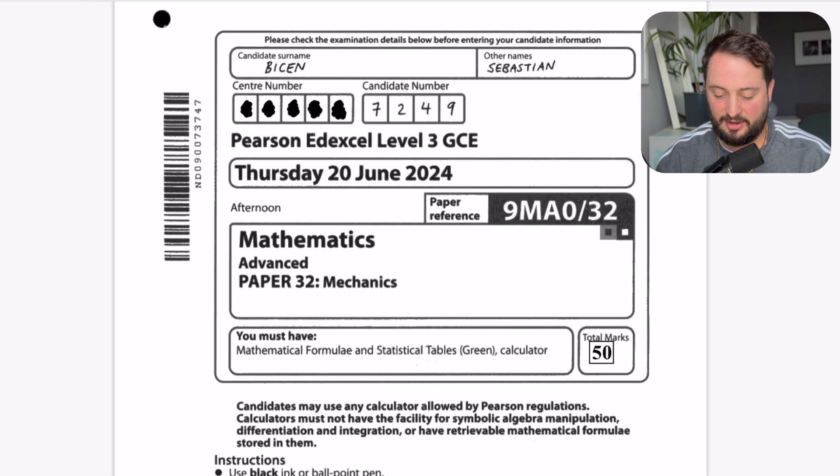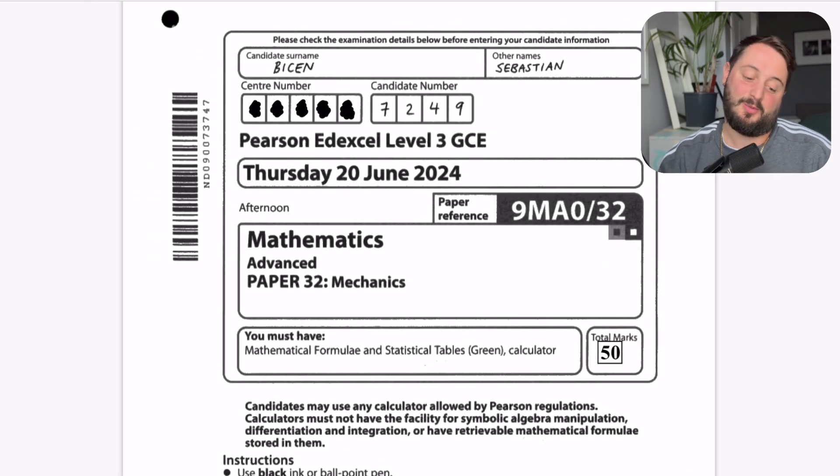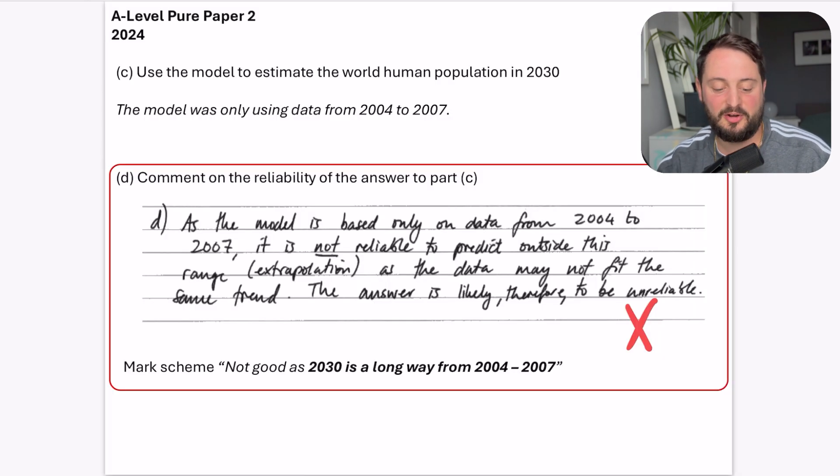Now where do you think I've dropped this mark in the pure paper? Well, I knew where I was going to lose this mark because it was one of the worded questions. I just find it so hard to know exactly what the examiner wants to see.